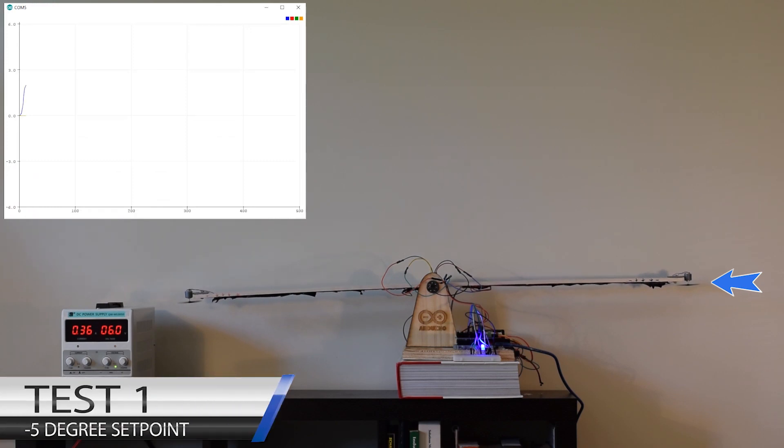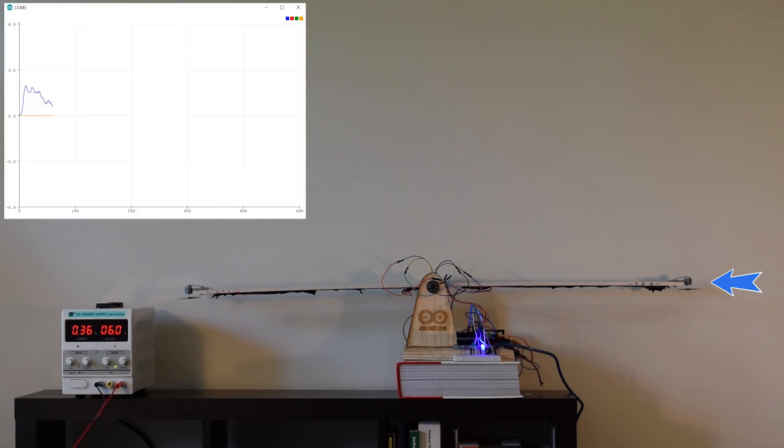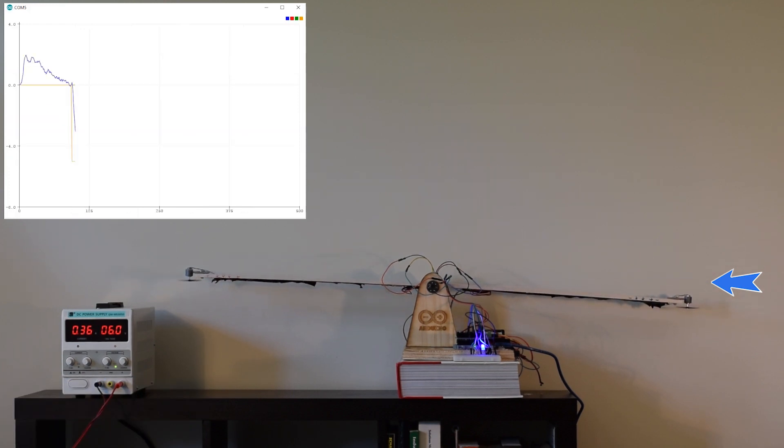Test 1 required the system to move to a fixed angle to the ground on startup, hold this position for 10 seconds, and then move to an angle of minus 5 degrees. The orange line represents the angle set point and the blue line is the angle value recorded by the gyroscope. On startup the inertia of the motors caused a slight rotation of the system. The code was able to vary the PWM signal to the motors and correct the error caused by the inertia.